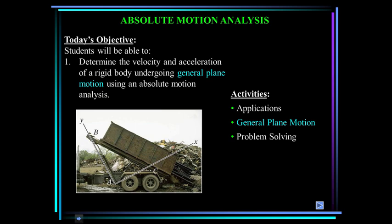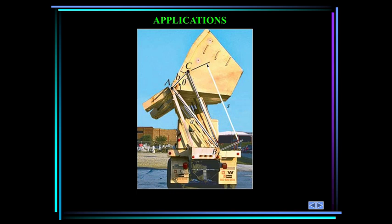Here's a dump truck. The dumping bin on the truck rotates about a fixed axis passing through the pin at A, and it is operated by the extension of a hydraulic cylinder that goes from B to C. The angular position of the bin can be specified using the angular position coordinate theta, and the position of point C on the bin is specified by using the coordinate S. If you're designing this, how do you relate the velocity of the hydraulic cylinder and the resulting angular velocity of the bin?